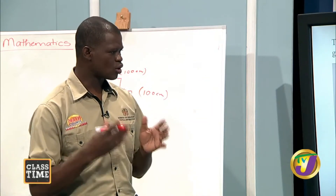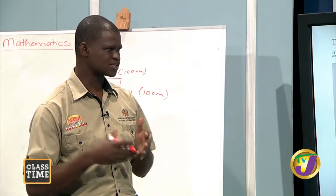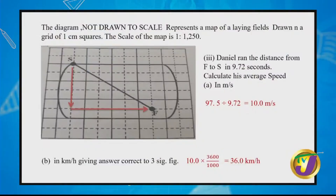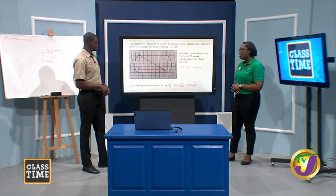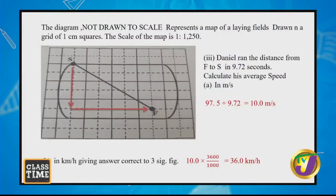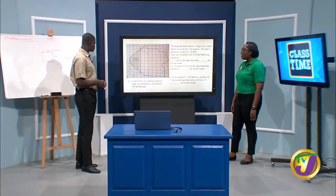Why do we write 36.0 km/h rather than just 36? Because the question requires three significant figures. '36' is only two significant figures, while '36.0' is three significant figures — the trailing zero after the decimal counts. So it is important to write the '.0' to satisfy the three significant figures requirement.